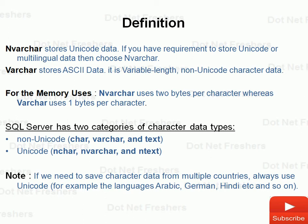For example, if you want to store data from different languages like Japanese, Arabic, German, or Chinese, then we use Unicode data types like NVARCHAR. If we want to store normal characters in the database, then we can use the non-Unicode data types. I hope you guys understand the basic difference between them. Thank you for watching this video.